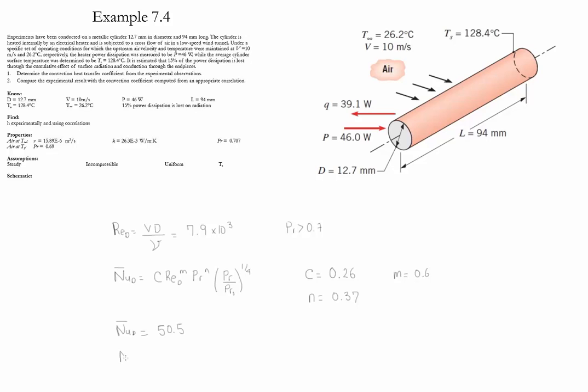Using the relationship that the Nusselt number is equal to h times D divided by k, we find that the value of the convection coefficient is equal to 105 watts per meter squared Kelvin.